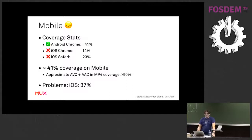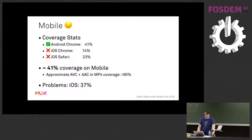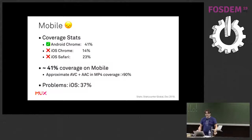When you work that out as numbers, it's pretty concerning. We need to reach as many people as possible - that's our objective. It's 41% coverage on mobile, compared to over 90% for AVC and AAC. So that's pretty bad. iOS alone represents 37% of the content we're missing.